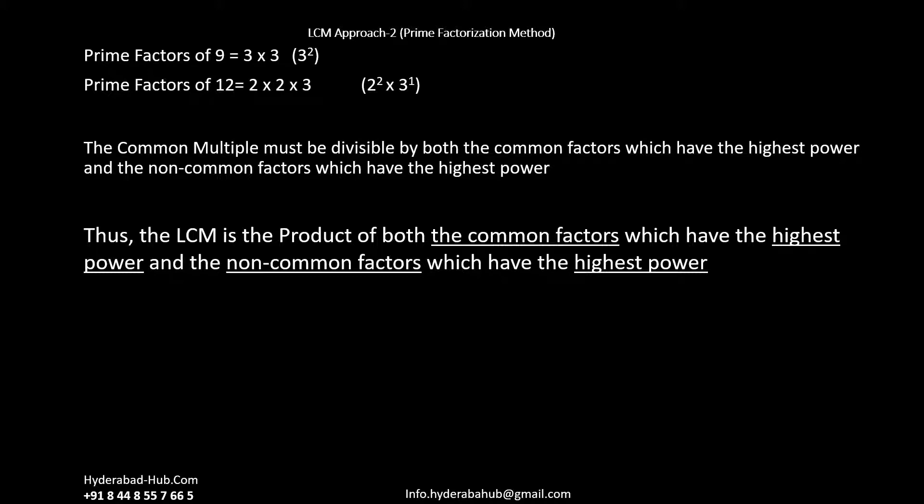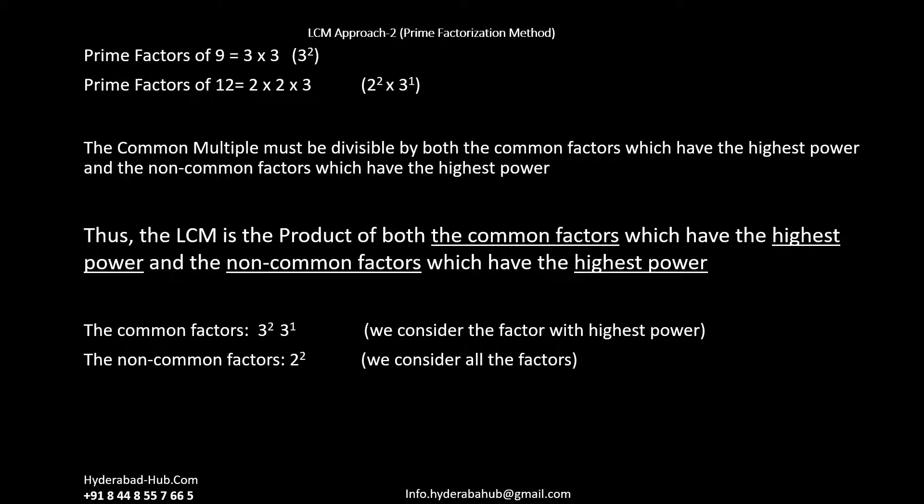The prime number 2 is not a common factor for 9 and 12. However, to function as the lowest common multiple, the LCM must be divisible by the common factors which have the highest power and the non-common factors which have the highest power. In this example, the LCM must be divisible by 3² and 2². Thus the LCM is the product of both common and non-common factors at their highest powers.